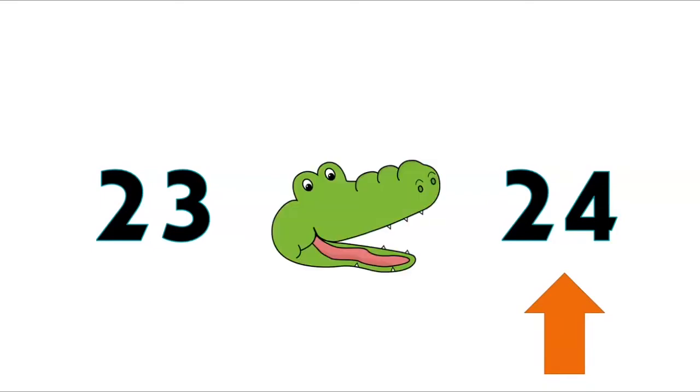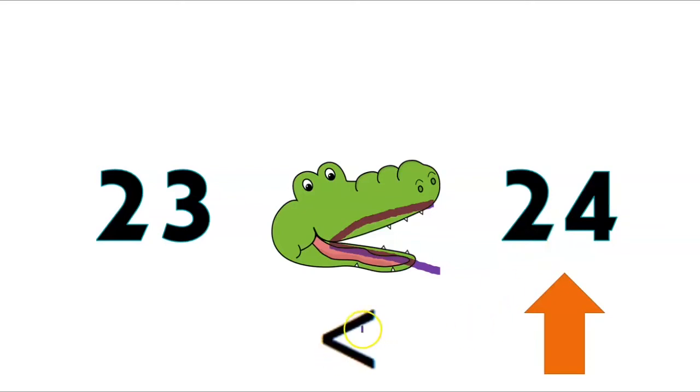Now we have the number 23 and the number 24. Our first step is to find the biggest number so Mr. Alligator can munch munch munch. What is our biggest number — 23 or 24? Great job, 24! Mr. Alligator is going to want to eat the number 24 because that's the biggest, and his mouth is open ready to eat 24. We would read it like: 23 is less than 24.